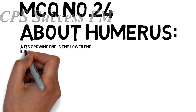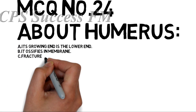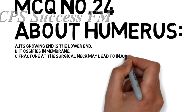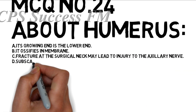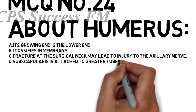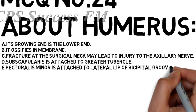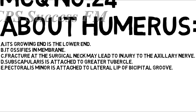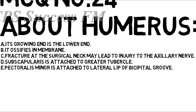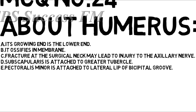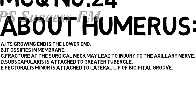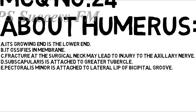Question number 24 is about the humerus. Option A is its growing end is the lower end. Option B is it ossifies in membrane. Option C is fracture of the surgical neck may lead to injury to the axillary nerve. Option D is subscapularis is attached to the greater tubercle. Option E is teres minor is attached to the lateral lip of the intertubercular groove.